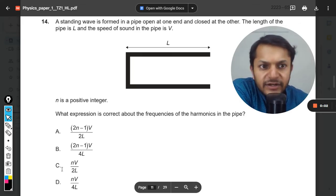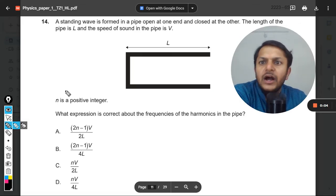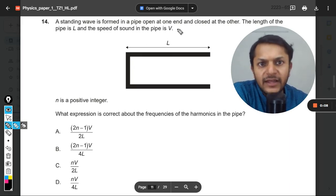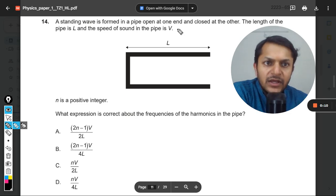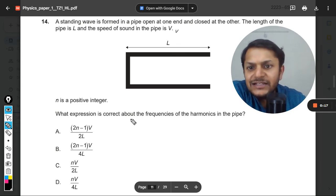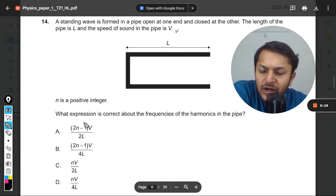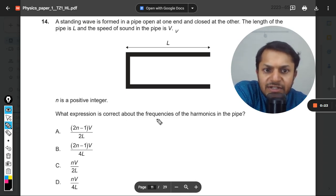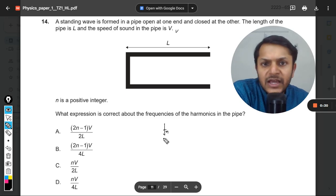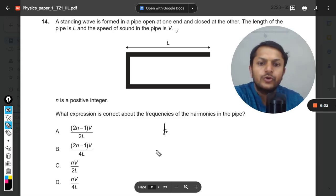Okay dear students, let us see what is in this question. A standing wave is formed in a pipe open at one end and closed at the other. The length of the pipe is capital L and the speed of sound in the pipe is given by V. N is a positive integer. What expression is correct about the frequencies of the harmonics in the pipe? You have to find the general expression for f_N. Let's see how to do it.